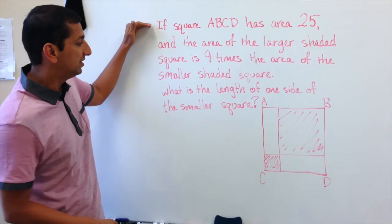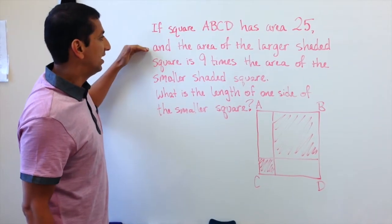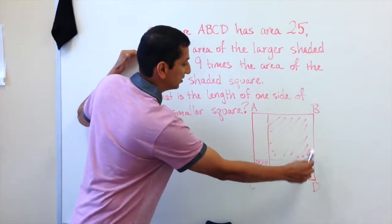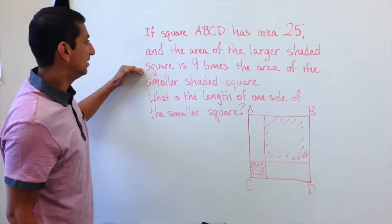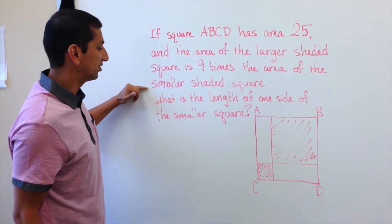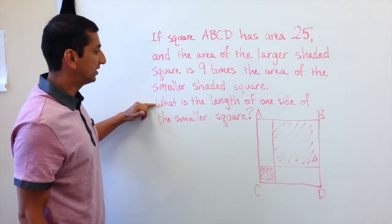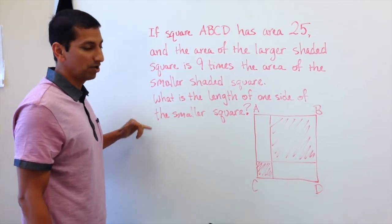If the square ABCD, which I've drawn here, has an area of 25 and the area of the larger shaded region here, the larger shaded square is nine times the area of the smaller shaded square down there. The question is, what is the length of one side of the smaller square?